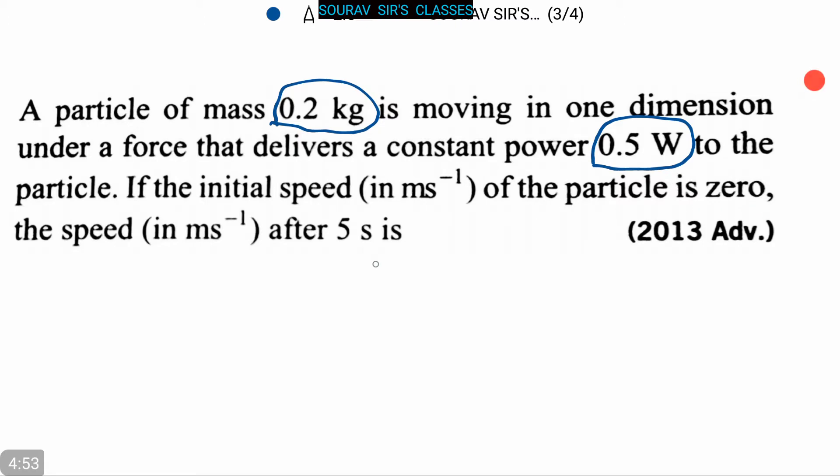Let's proceed to the solution. W equals (1/2)MV². We know that work is (1/2)MV², so Pt equals (1/2)MV². From this we can write that V equals the square root of (2Pt/M).